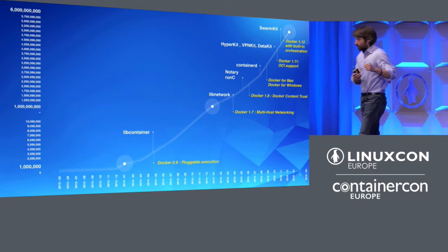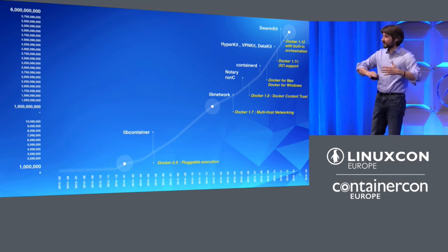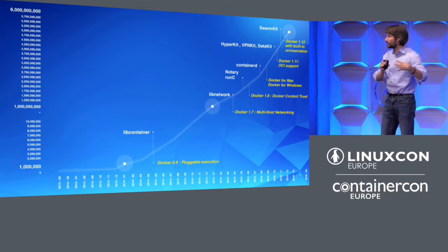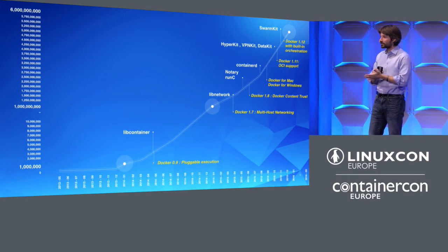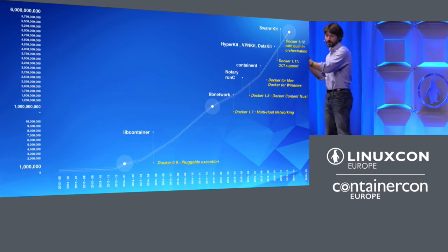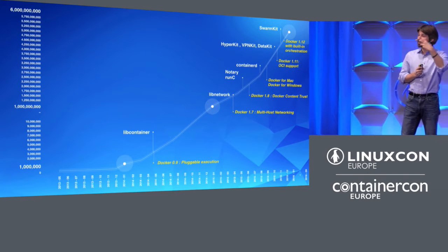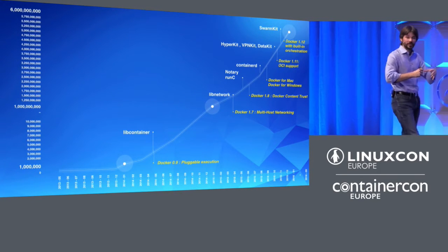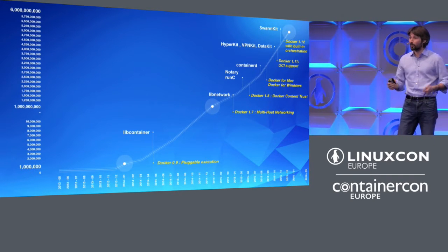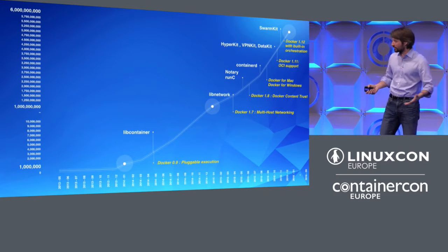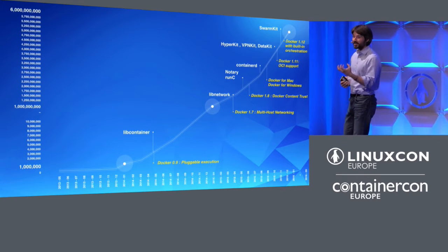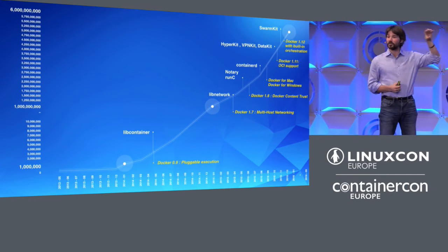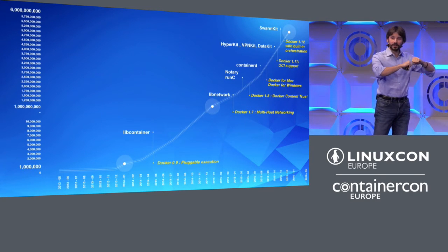If you look at the timeline, there are examples of problems we've solved with Docker — features added to the product — and at the same time a timeline of components we've open-sourced. There's a correlation: as we solve different problems, we've had to open-source different components. For example, early on we had to solve the problem of container provenance and origin — if you want to deploy containers, you need cryptographic verification of where they come from. In solving that problem, we implemented a component called Notary, which provides all the primitives for content trust, and we open-sourced it as a separate, loosely-coupled component.